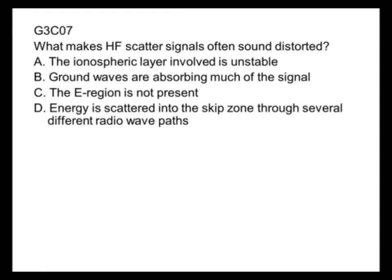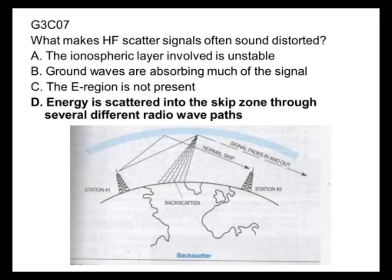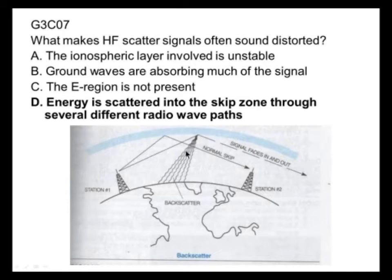What makes HF scatter signals often sound distorted? The energy is scattered into the skip zone through several different radio wave paths, as shown in the graphic — the signal is coming through various paths.